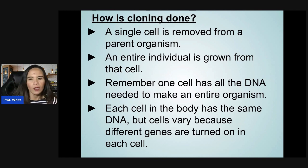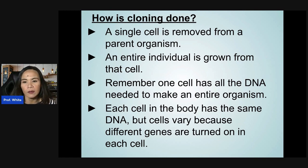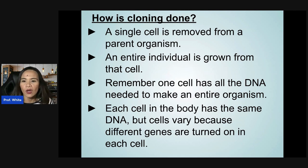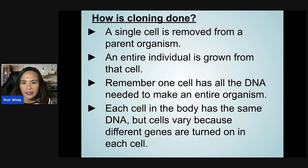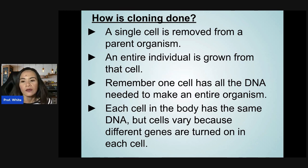How is cloning done? A single cell is removed from a parent organism, and an entire individual is grown from that cell. One cell has all the DNA needed to make an entire organism. Each cell in the body has the same DNA, but cells vary because different genes are turned on in each cell.